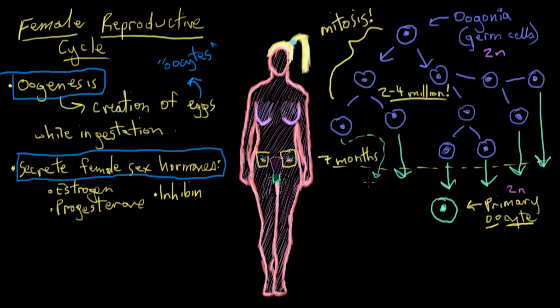And then these primary oocytes, they begin meiosis I, and meiosis is what our germ cells use to reduce our chromosome copy number. And by that, I just mean the number of copies of DNA that we have. So they start this process of meiosis I, but they don't actually finish it. They just kind of get about halfway through, and then they stop.